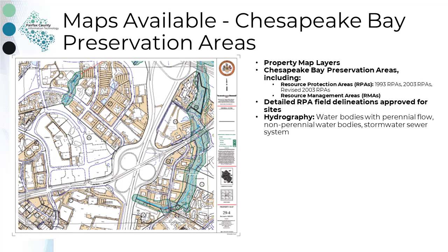The Chesapeake Bay Preservation Areas map provides a delineation of Chesapeake Bay Preservation Areas, Resource Protection Areas, and Resource Management Areas. The maps were adopted by the Board of Supervisors on November 17, 2003. Revisions to the 2003 RPAs were made based on a quality assurance field and map review, and were adopted by the Board of Supervisors on July 11, 2005, effective July 12, 2005. In addition, the Chesapeake Bay Preservation Areas map displays all the property map layers and hydrography features, such as water bodies and stormwater sewer systems.